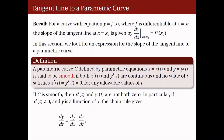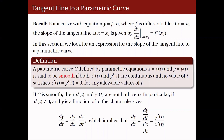In particular, if x prime of t is non-zero and y is a function of x, then dy over dt is expressed as dy over dx times dx over dt. Solving for dy over dx gives us dy over dt divided by dx over dt, or simply y prime of t over x prime of t.